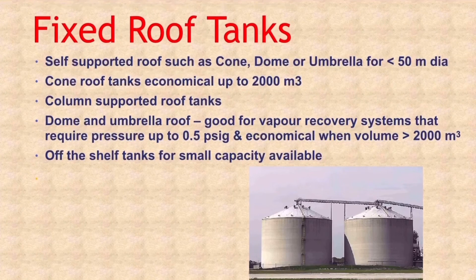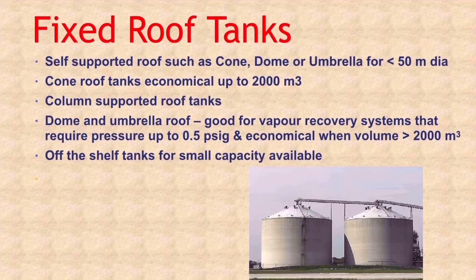The three types of self-supporting fixed roof tank designs are cone, dome, and umbrella type, and they are competitive in sizes less than 50 feet in diameter. Cone roof tanks are economical when the volumes are up to 2000 meter cube; otherwise, column supported cone roof tanks represent the least expensive storage and offer minimal maintenance. Dome and umbrella roofs are often the most economical types for vapor recovery and are economical when the volumes are greater than 2000 meter cube.